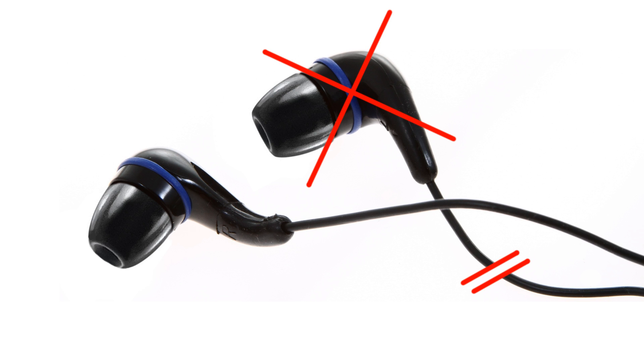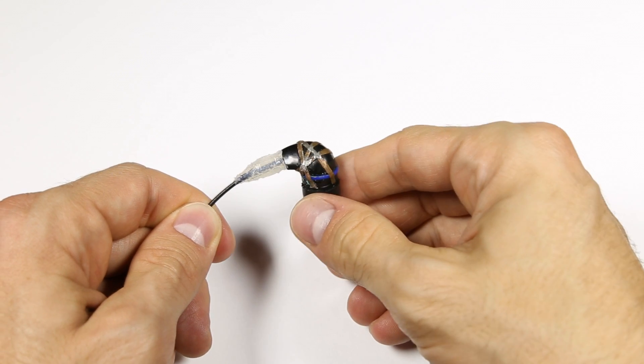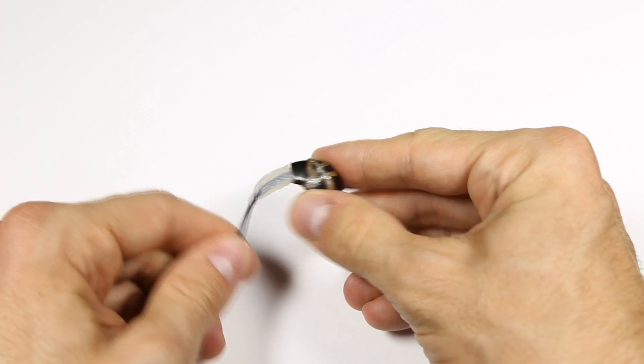Earphones usually go bad in a few key spots where the wires bend a lot. One spot is right next to the earbuds. If they don't have a good strain relief to take away some of the stress, they'll eventually fail here.